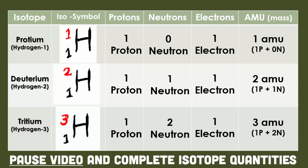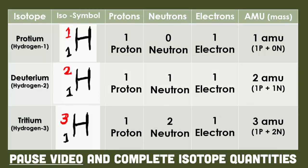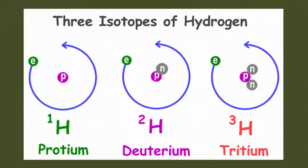Again, same number of protons means same number of electrons, because they're electrically neutral. These are all neutral — these are not ions. These are what we call Bohr models, which is coming up in a future video. This is just showing you that they have the same number of electrons and protons in every picture, but the only thing that's changing is the number of neutrons, which is what an isotope is.